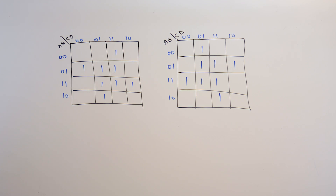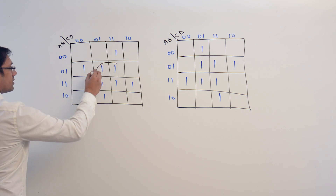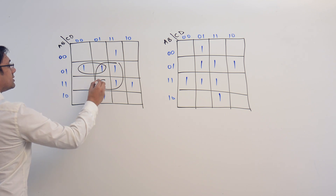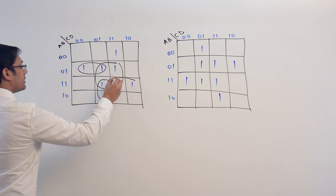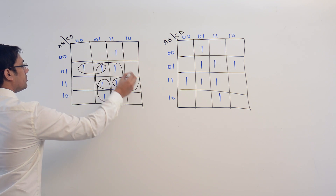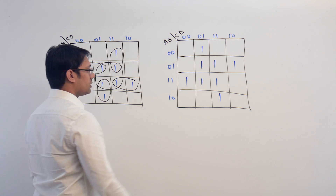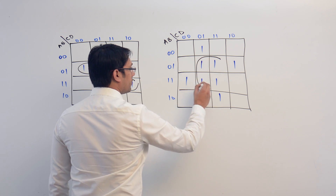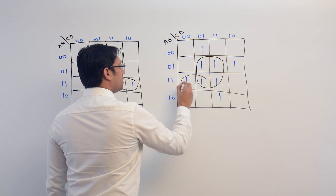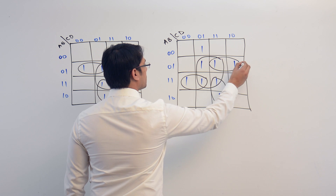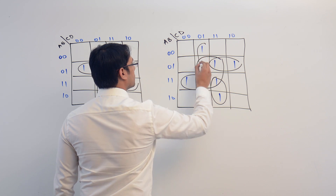Consider these two K-maps. We can make subcubes in these two K-maps like this. This is one subcube, this can be a subcube, this can be a subcube, this can be a subcube, as well as this can be a subcube. In the same way, here in this K-map, this can be a subcube, this will be a subcube, this will be a subcube, this will be a subcube and this will be a subcube.